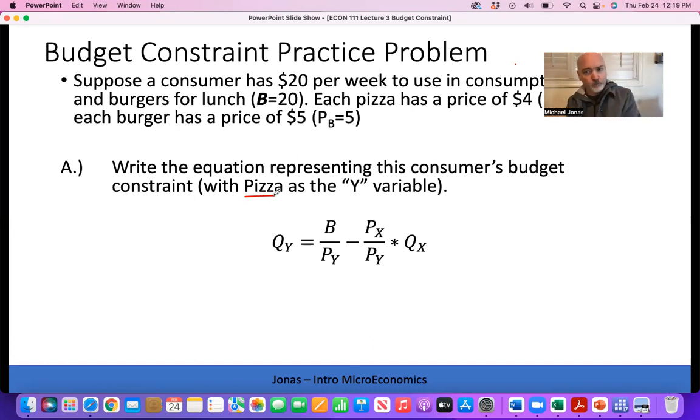Then that ratio of prices, PX over PY, is the rate of trade-off between the two goods - the opportunity cost of consuming each unit of X, how much Y we have to decrease from that maximum level. All we've got to do is change the notation. Y will be pizzas, X will be burgers.